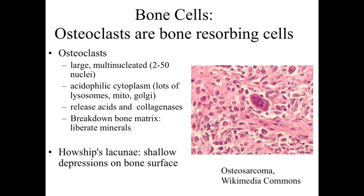The final bone cells are the osteoclasts — the bone-resorbing cells. These are different from the other bone cells: they're very large and multinucleated, with some books describing up to 50 nuclei. They have very acidophilic cytoplasm because they contain lots of lysosomes, mitochondria, and Golgi, as they're producing lysosomes filled with acids and collagenases. Acids leach out the minerals — similar to demineralized bone preparation — and collagenases break down the collagen, allowing osteoclasts to essentially break down the bone matrix. They sit on a surface of bone, often in a shallow depression called Howship's Lacuna, and dump out their acids and collagenases to break down the bone material.